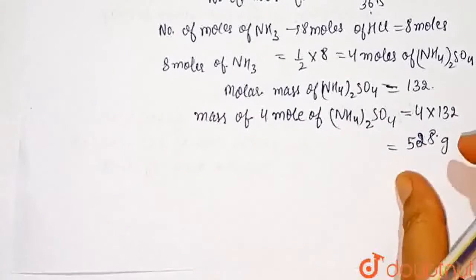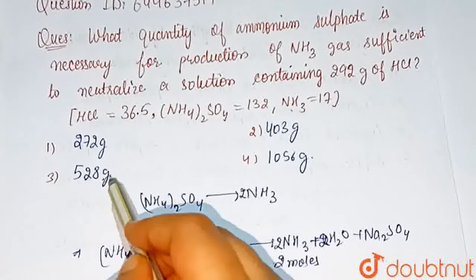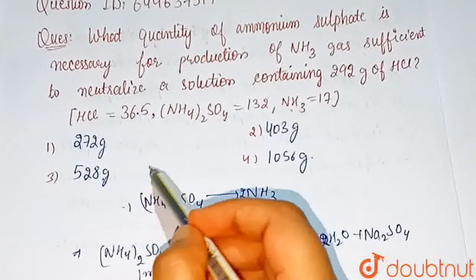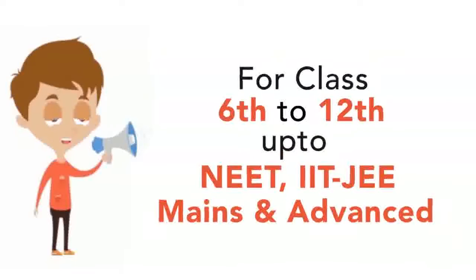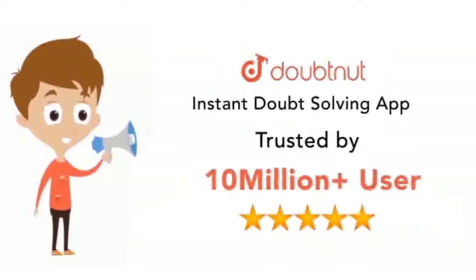So 528 gram of ammonium sulfate is necessary for production of ammonia gas sufficient to neutralize a solution containing 292 gram of HCl. So option 3 is the correct answer of this question.